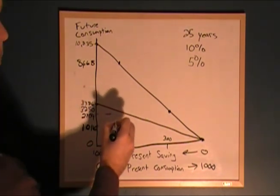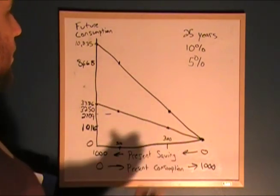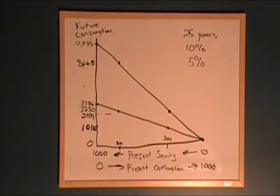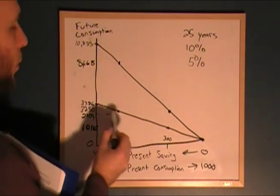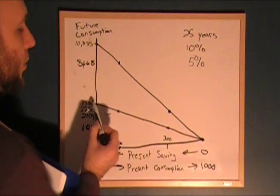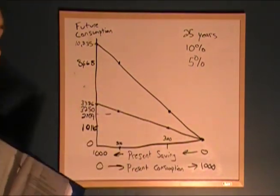So our points are going to look here and here. A 5% drop in the interest rate is a big, significant change. Where are we going to choose to consume on either of these lines? Well, personal preference is going to dictate that to us.